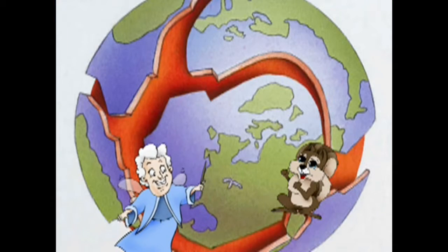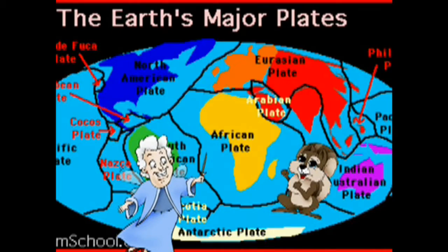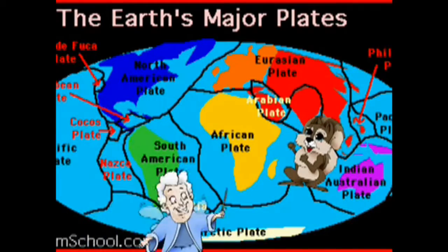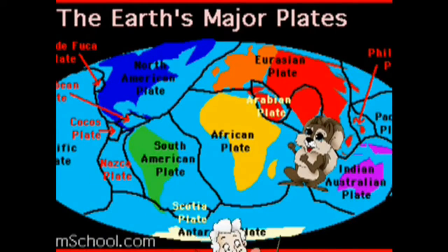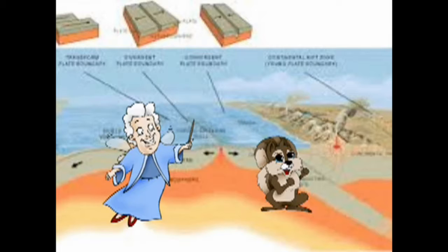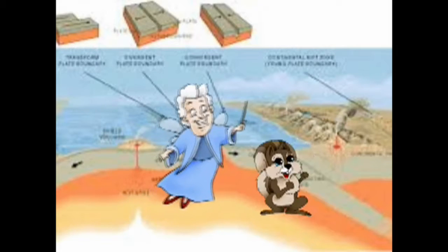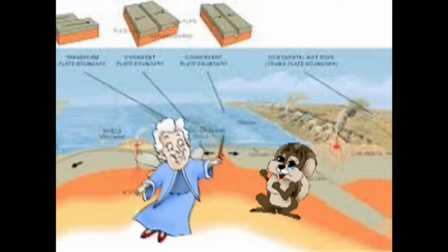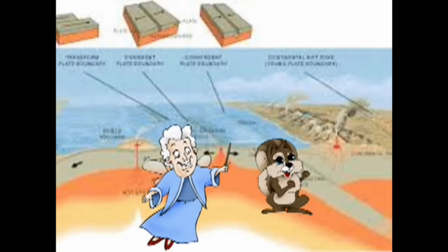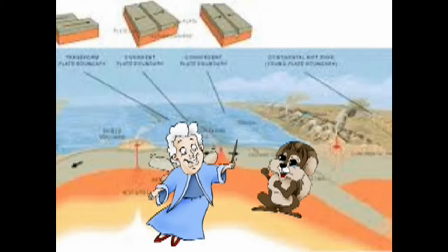There are seven large and twelve small plates — these are the earth's major plates. This may also be known as constructive plate boundaries. Sliding boundaries are when the plates slide past each other in the opposite direction.